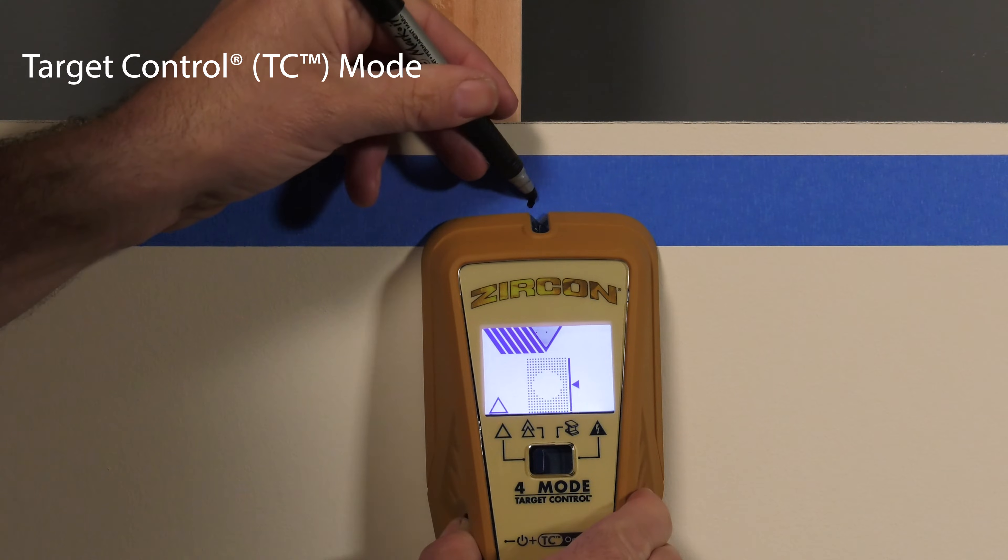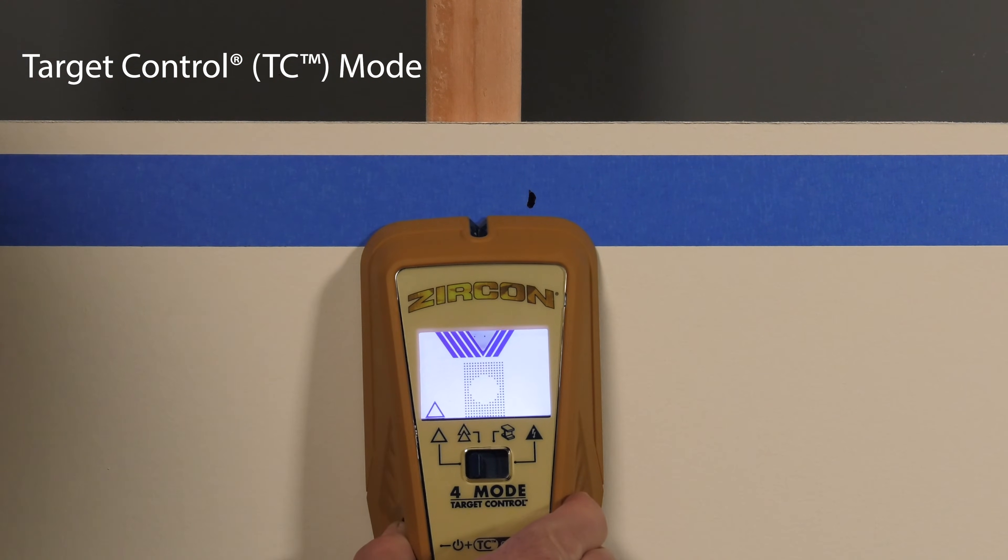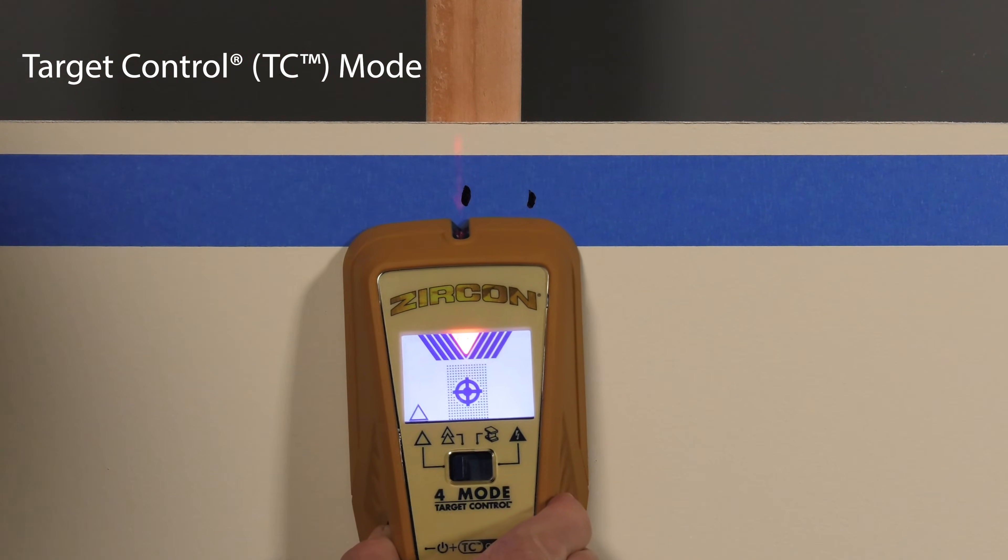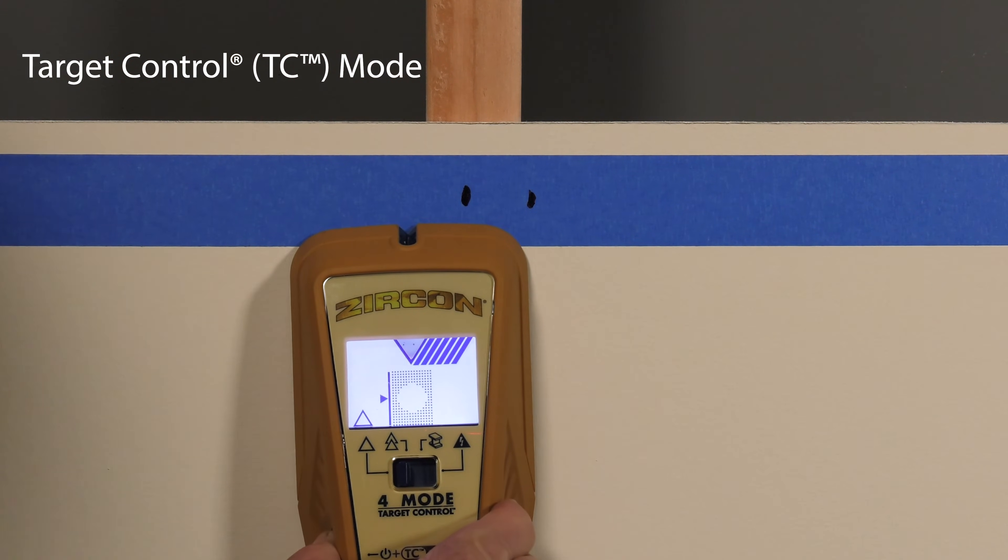Mark the edge. The spotlight pointer shines when you find the stud's center. Mark the center. Continue scanning to find the other edge. Mark this edge.